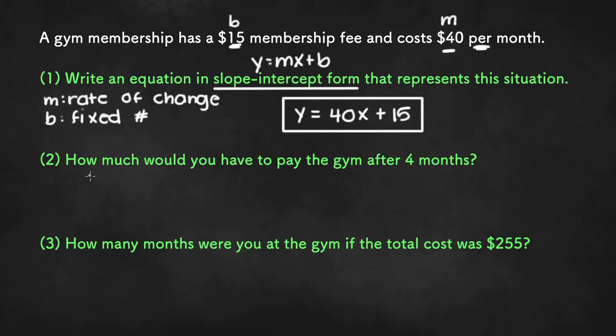Now the next part asks, how much would you have to pay the gym after four months? So before we work on this question, let's define x and y in terms of the word problem given here. First of all, y is the total, and in this case, since we are talking about money, y would be the total cost. And x is related to the m value. Since m is 40 and the word problem says $40 per month, x is the number of months.